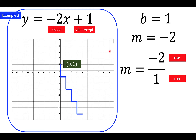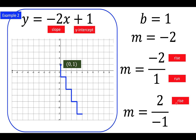Notice that m equals negative 2 can also be expressed as 2 over negative 1, which is still negative 2. In this case, the rise is 2 units but the run is negative 1 unit. In other words, we can also get the same line by going up 2 units and going left 1 unit. If you connect all these points, we get the graph of y equals negative 2x plus 1.